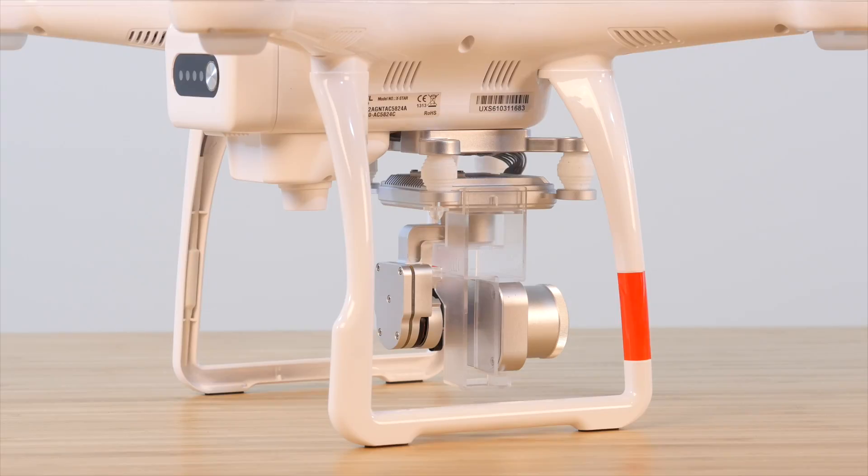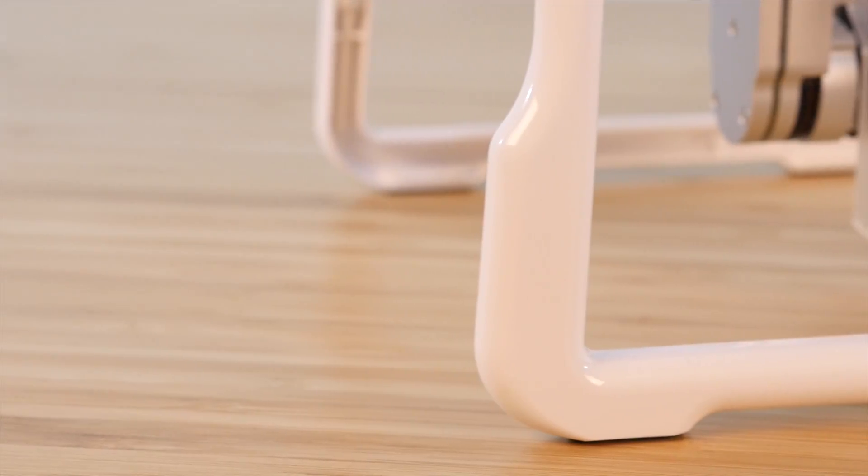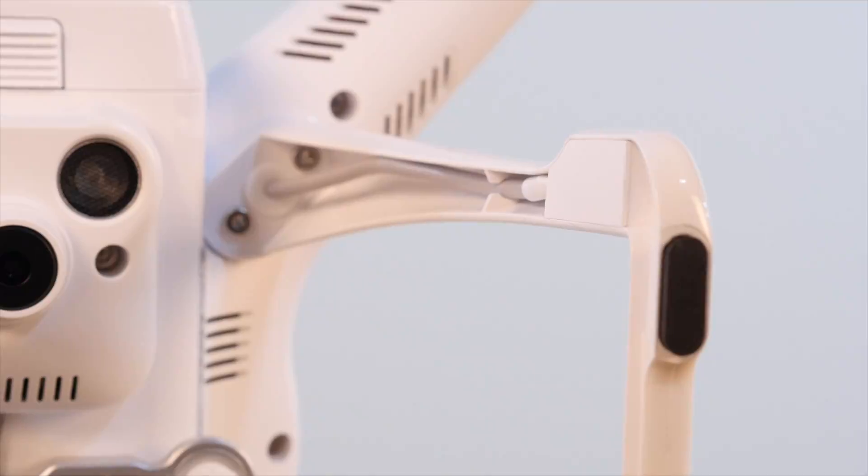Last but not least, the landing gear and compass. The X-Star's compass is tucked in the back right leg of the landing gear. This is what measures the geomagnetic field and helps your X-Star know exactly where it's at.